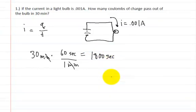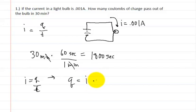Now we can use the formula, which is the current is equal to the charge divided by the time. We have to manipulate this, because we already know the current and we already know the time, but we don't know the charge. So we're going to say that the charge is equal to the current multiplied by the time.